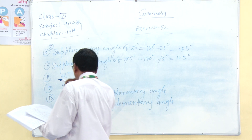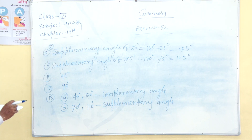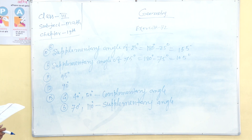So we are talking about the supplementary angle of two angles. When two angles add up to 180 degrees, it is called a supplementary angle.